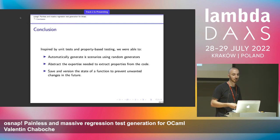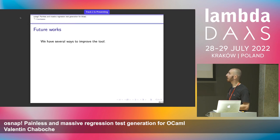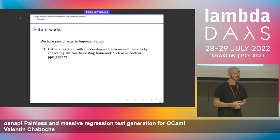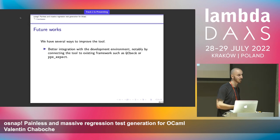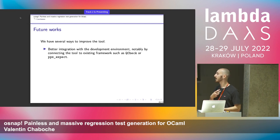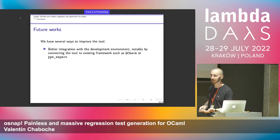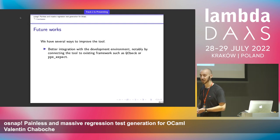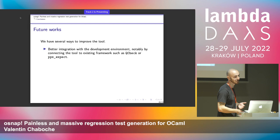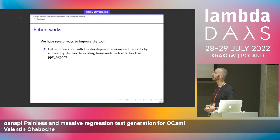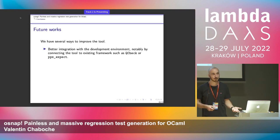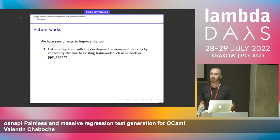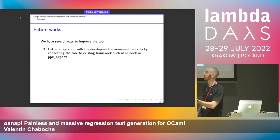We have several ways to improve the tool. First, I created another testing framework, but at my company we already have six to eight different testing frameworks — so people don't want another one. A good improvement would be to plug the tool into existing ones. In OCaml, we have QCheck, which is very popular — it's like the QuickCheck implementation in OCaml — so I'd like to plug my ideas into that tool.